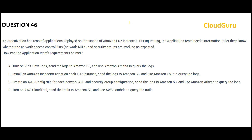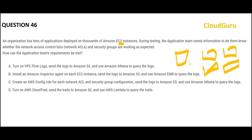The next question: you have tens of thousands of applications on many EC2 instances. The application team needs to know whether the network ACLs and security groups are working as expected during testing. How can they find out? Pick from the four options.